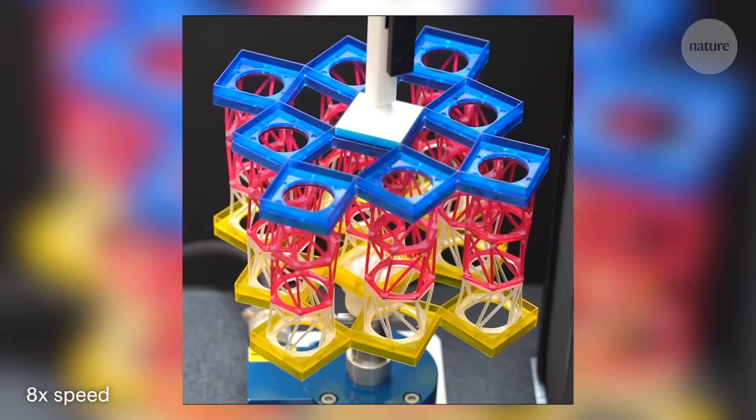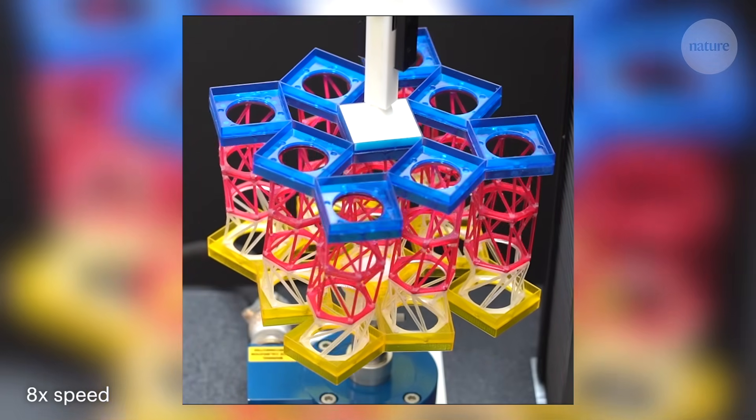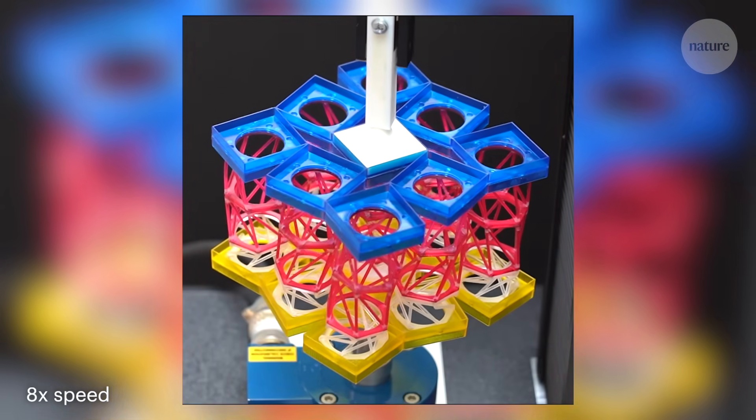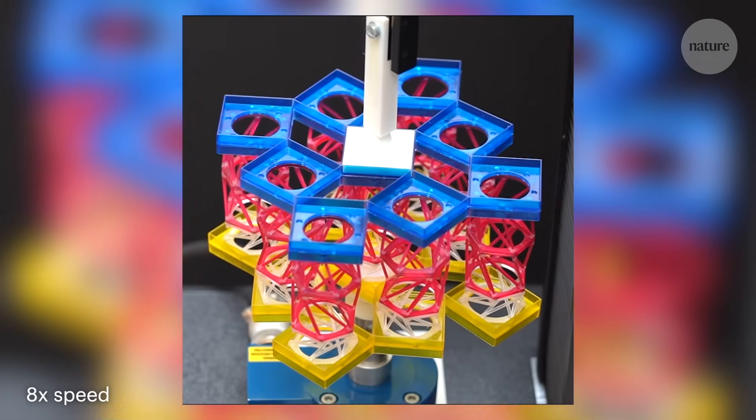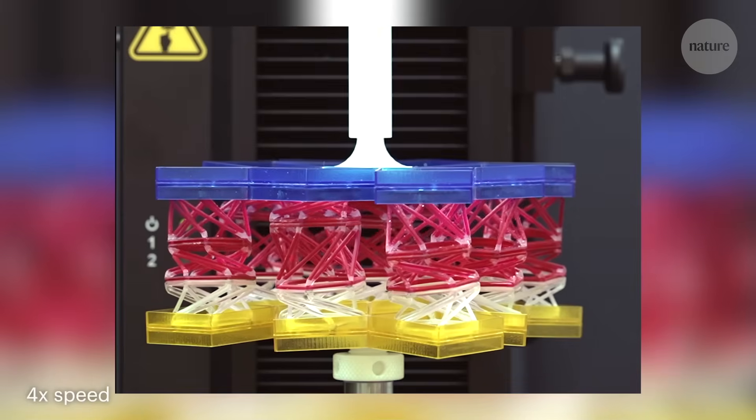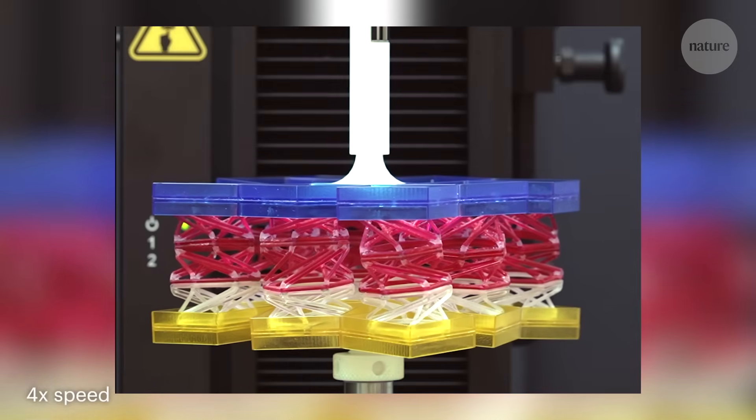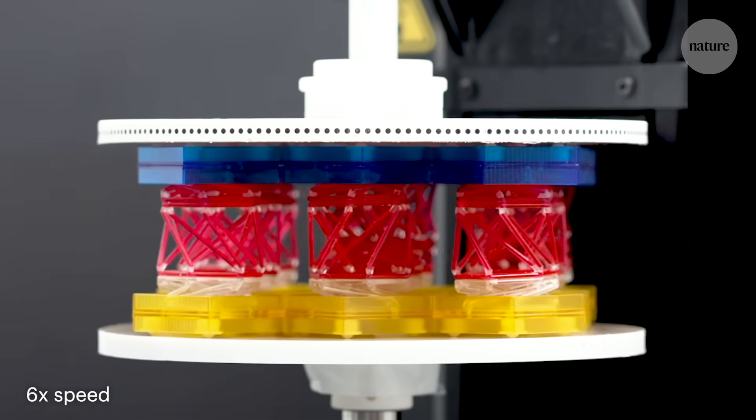Combining these modules in different ways gives rise to a variety of properties. A folding square arrangement creates an object that reduces in width and height when given a twist, or twists as you deform its height.